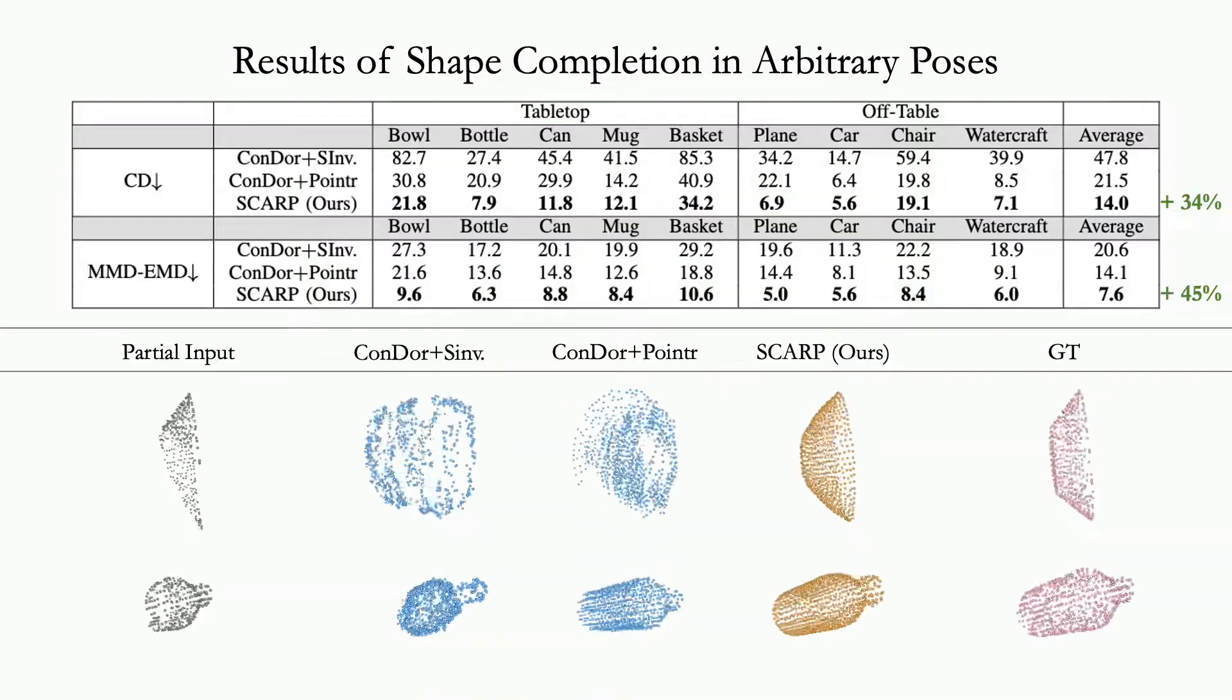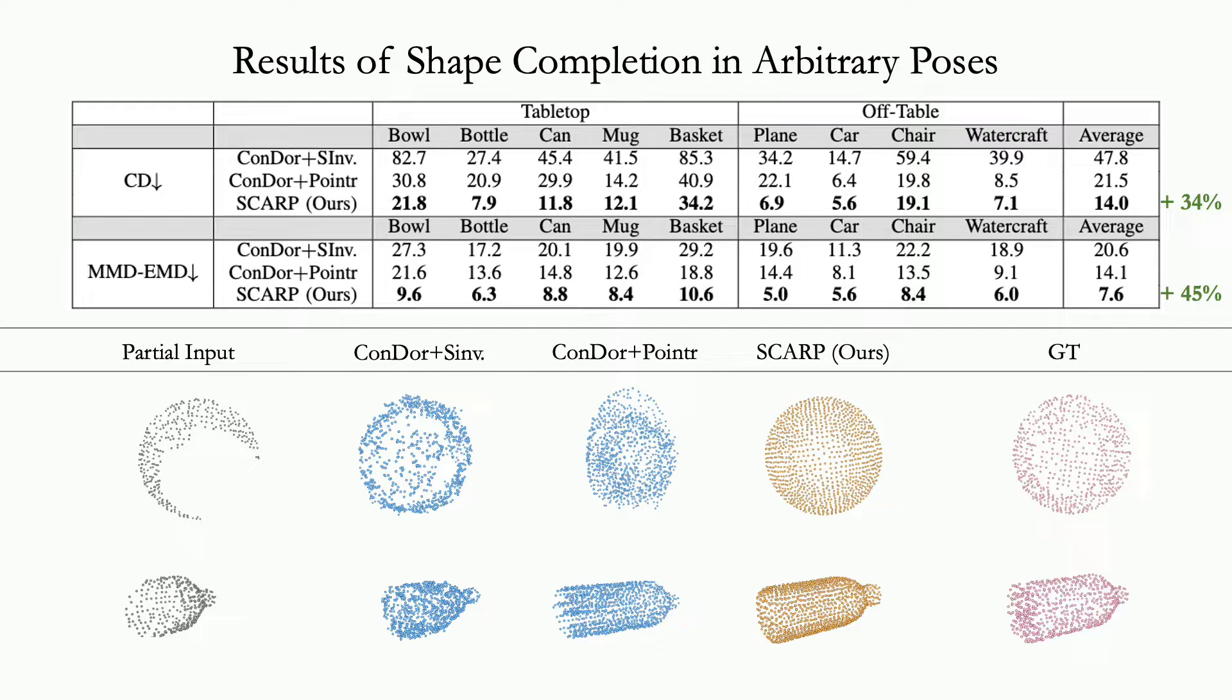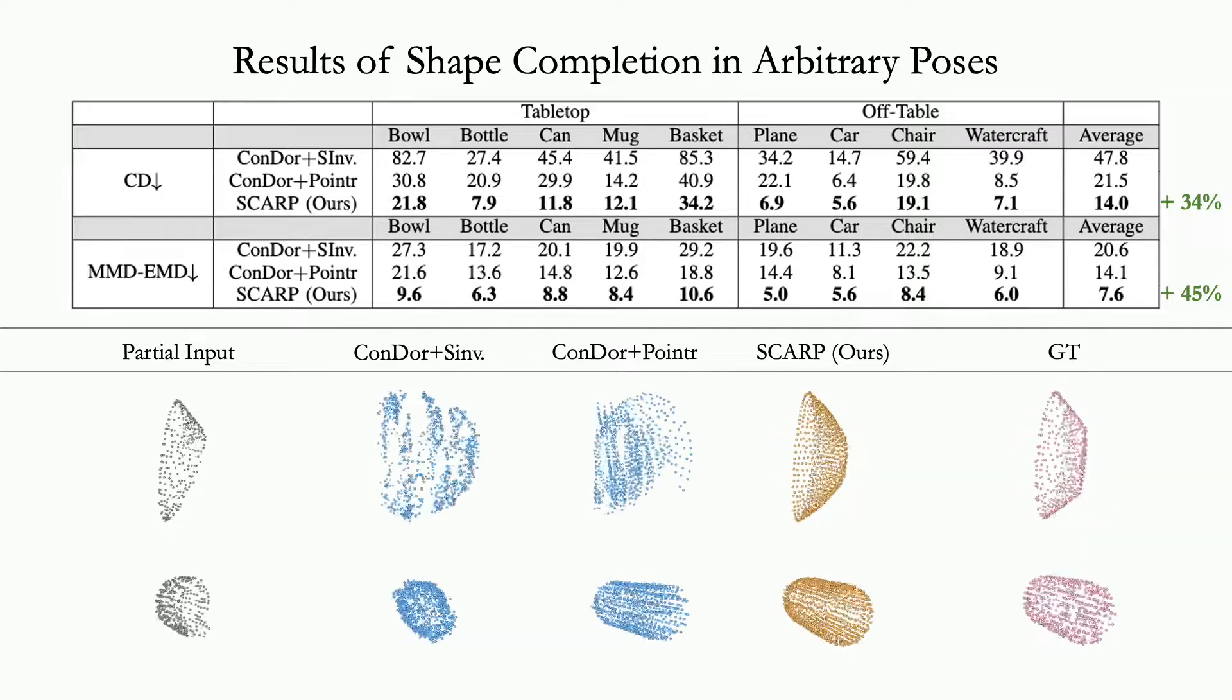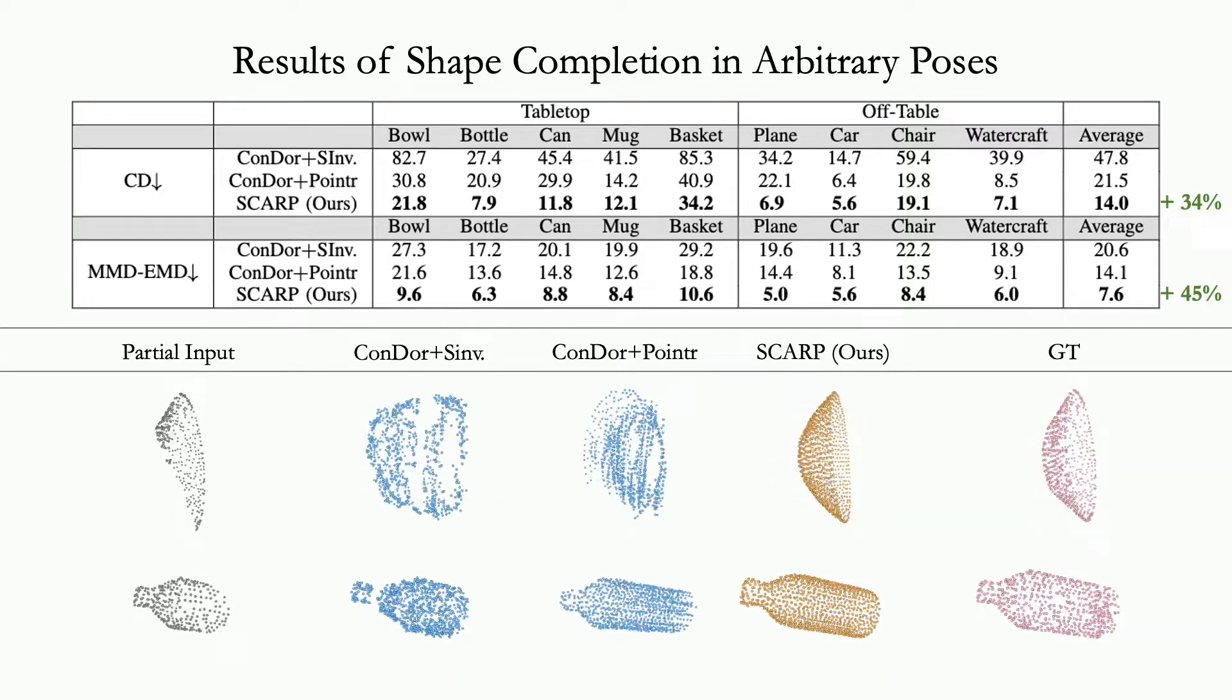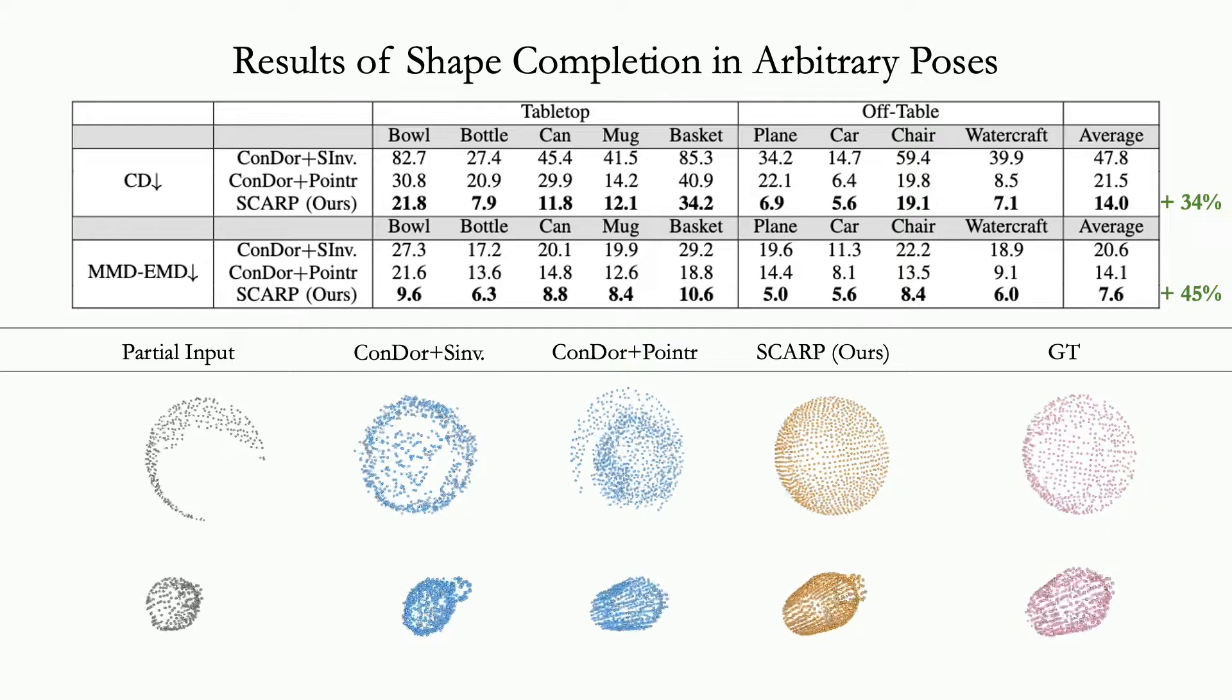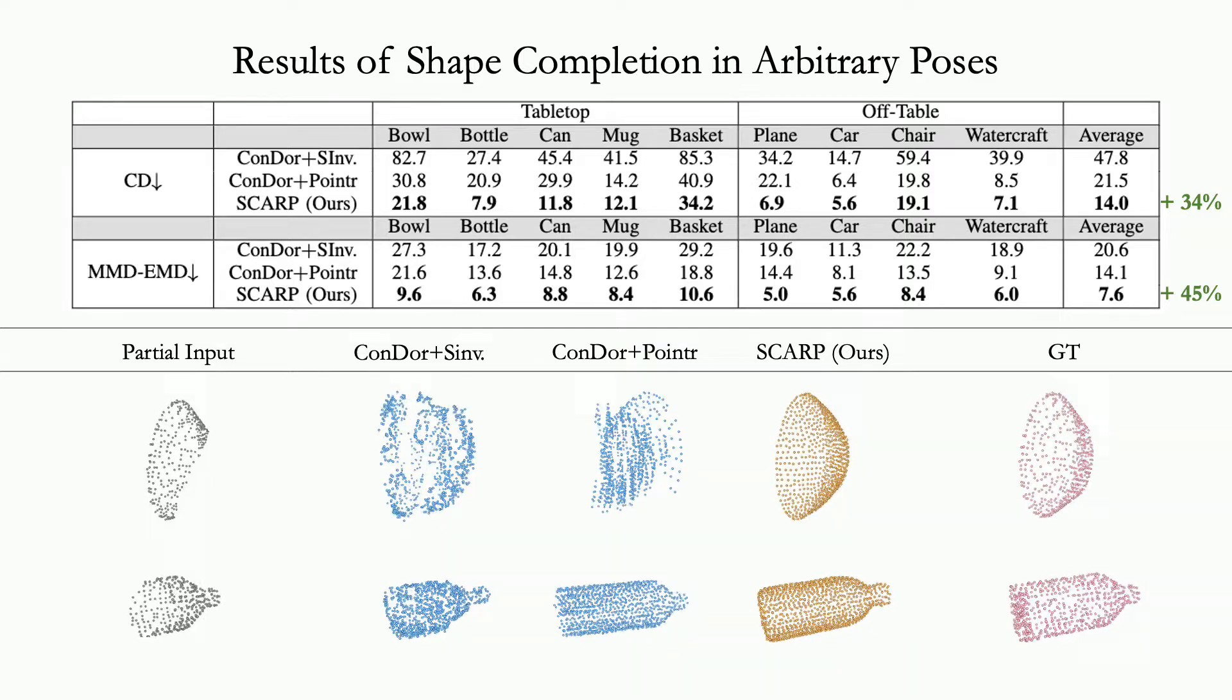This is evident from the quantitative metrics, where we outperform the best baseline by 45% in the maximum mean discrepancy earth movers distance (MMD-EMD) and 34% in Chamfer distance (CD).